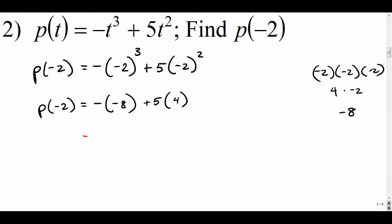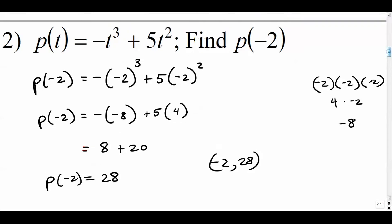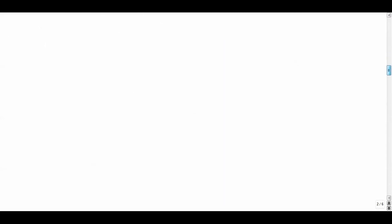Let's see, we get negative negative 8, which of course is positive 8, plus 20. So this answer is 28. p of negative 2 is 28, so that would yield a point on our graph: negative 2 comma 28. We'd go 2 left and 28 units up.